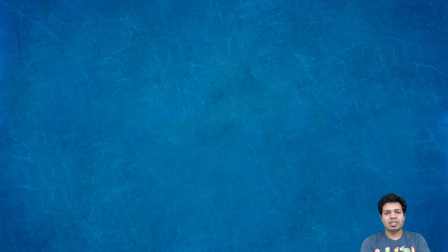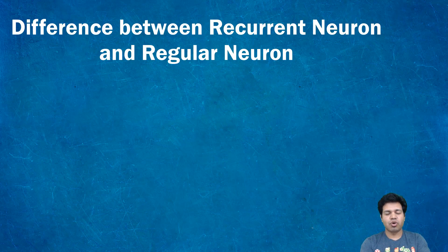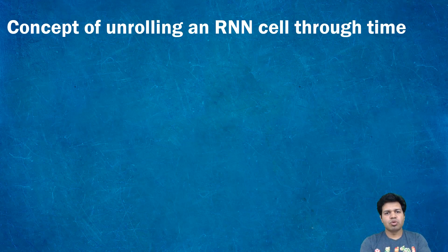Hello folks, welcome to the AI University. In this video I am going to cover the difference between regular neurons and recurrent neurons, of which recurrent neural networks are made up of. I am also going to explain the concept of unrolling an RNN cell through time.